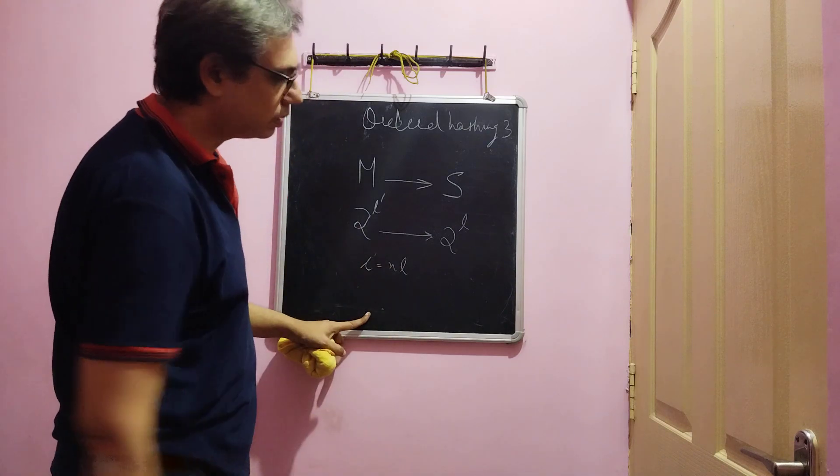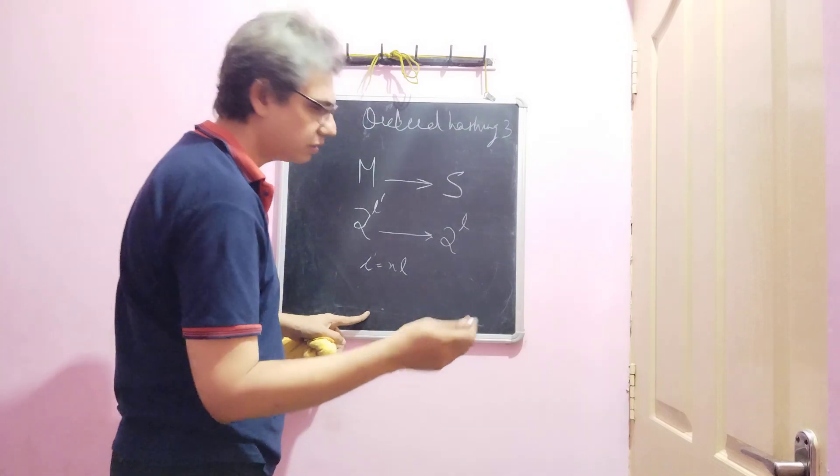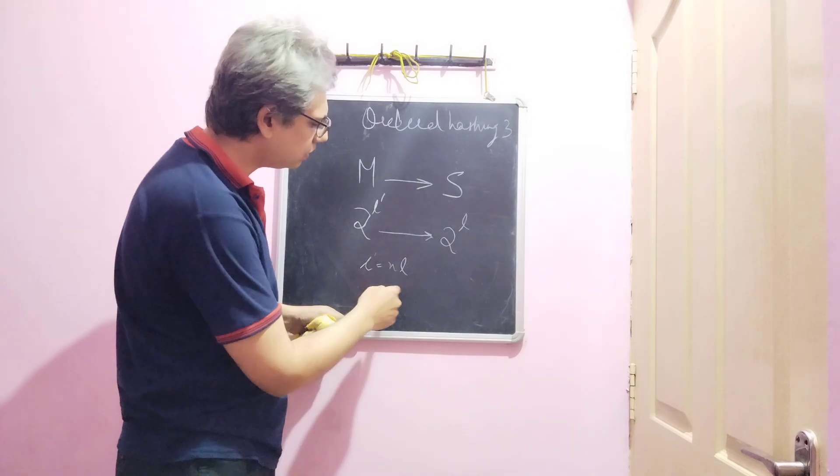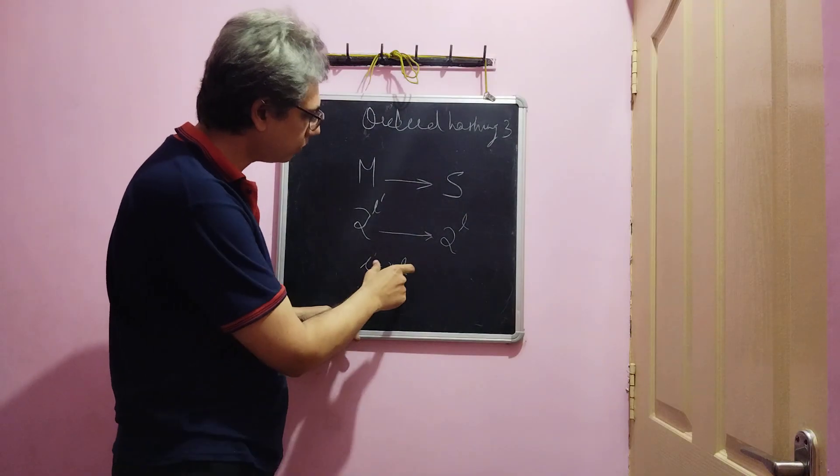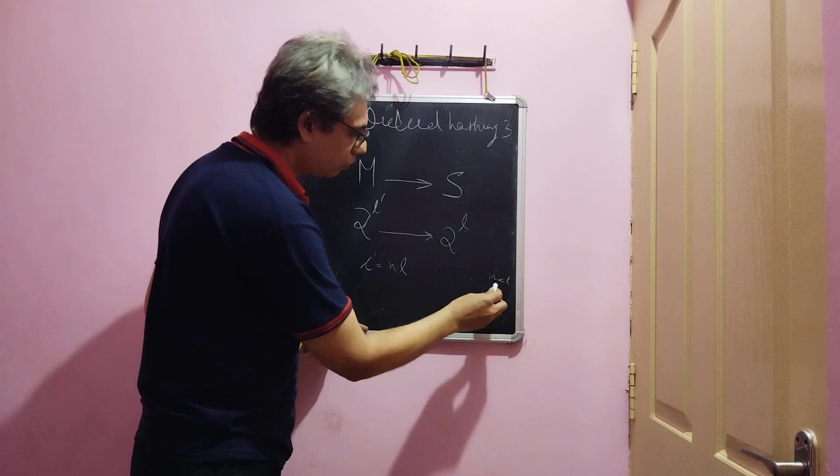Typically n will be 8 if it is a byte, or if it is 2 bytes such as unicode n could be 16. Now generally this is ideally suited for n less than, fairly less than l, close to l square.